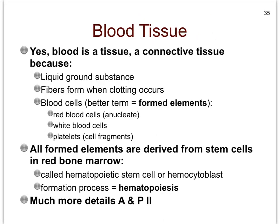We already discussed that all of the formed elements arise from the hematopoietic stem cell, also called the hemocytoblast, by means of the process hematopoiesis — all occurring in the red bone marrow. But we do need to address the question: why is blood considered a connective tissue? Blood actually does follow the two criteria of connective tissue: it must have extracellular material called the matrix, and it must have cells.